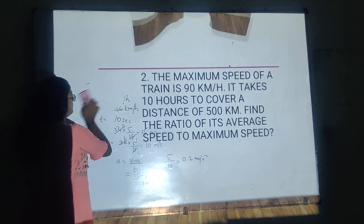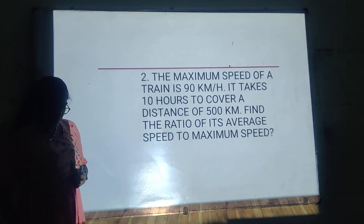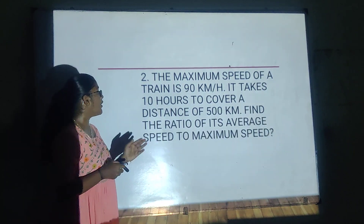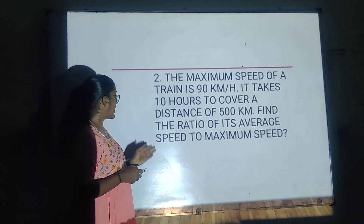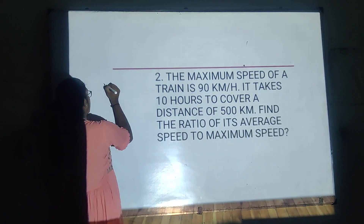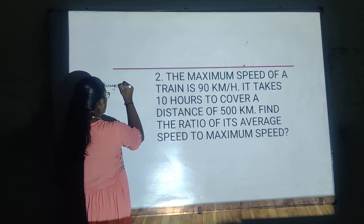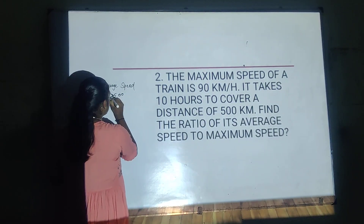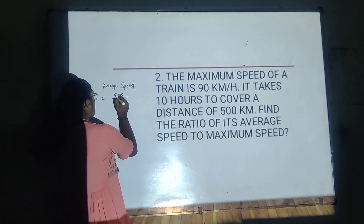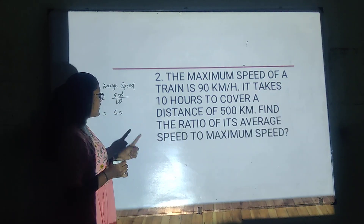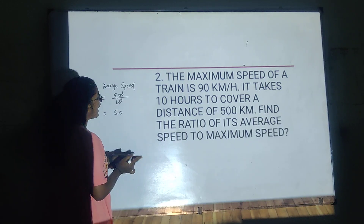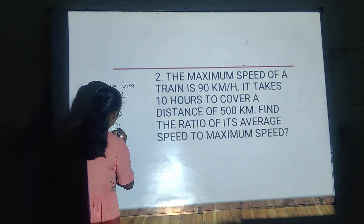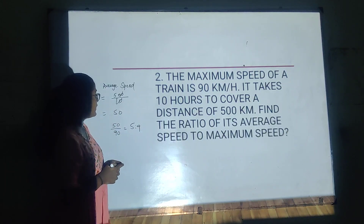Now let us see the next question. The maximum speed of a train is 90 km/h. It takes 10 hours to cover a distance of 500 km. Find the ratio of its average speed to maximum speed. Average speed = total distance / total time = 500 / 10 = 50 km/h. The ratio of average speed to maximum speed = 50 : 90 = 5 : 9.